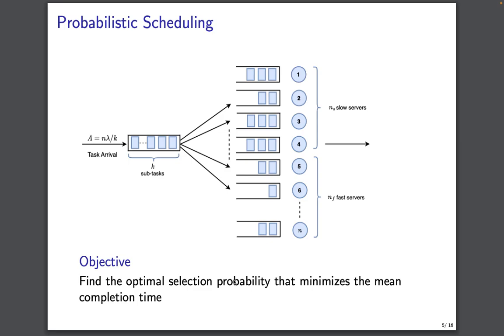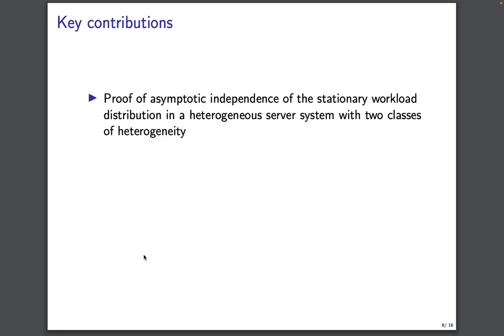This is what our probabilistic policy looks like. Whenever a task arrives, it's divided into K sub-tasks. With some probability PS, which is the slow server selection probability, we assign it to a slow server, or with probability 1 minus PS, it is assigned to a fast server. Our objective is to find the optimal selection probability which minimizes the mean task completion time.